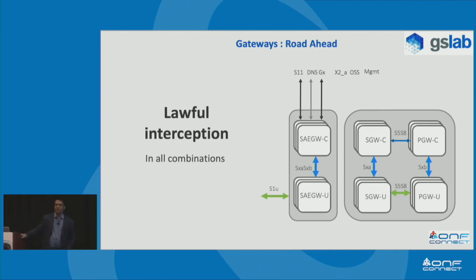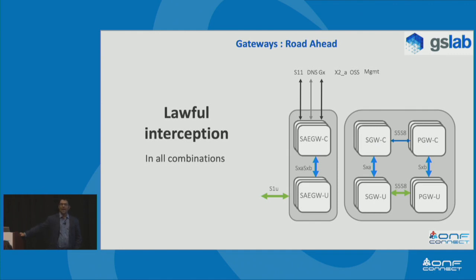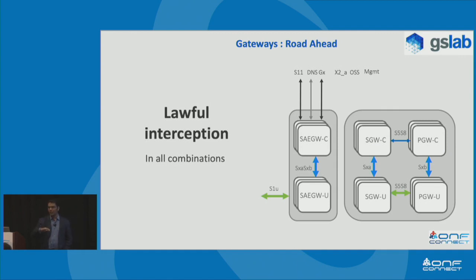Lawful interception was discussed yesterday multiple times by Lyle from Sprint, Michael from T-Mobile, and Nikhil from JS Lab — it is one critical component for all deployments. However, you cannot have it completely in open source because of obvious restrictions. We will follow the same model as CLI: we will have the required provisions and hooks made into the code, while implementation or customization based on deployment or regulatory parameters will be left to the deployment owners or operators. Required hooks, parameters, and API support will be provided in the code with references to the specifications.